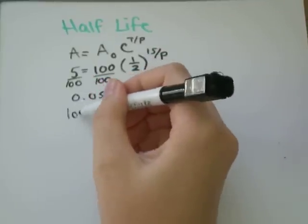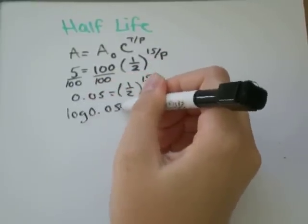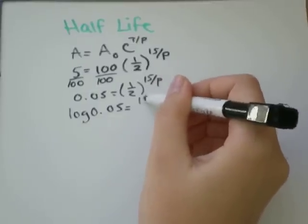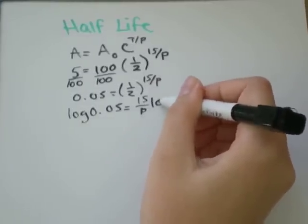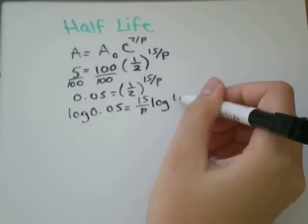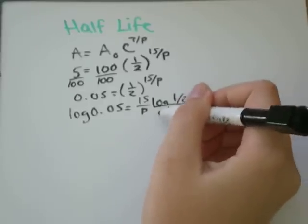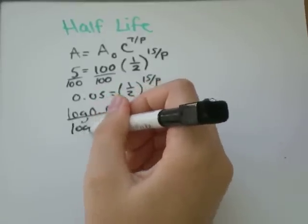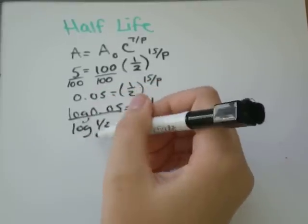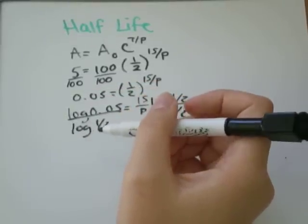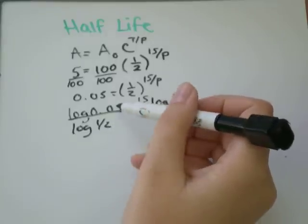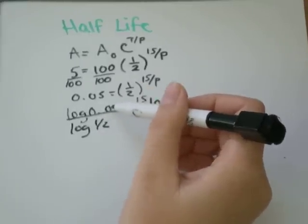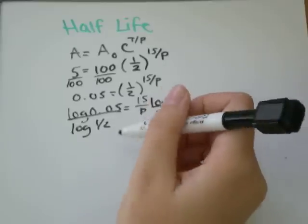We'll take the log of both sides. Log 0.05 equals power rule of logs. We'll get 15 over p times log of 1 half. Divide both sides by log of 1 half. And they're both base 10. If you don't see the base written, assume it's base 10.